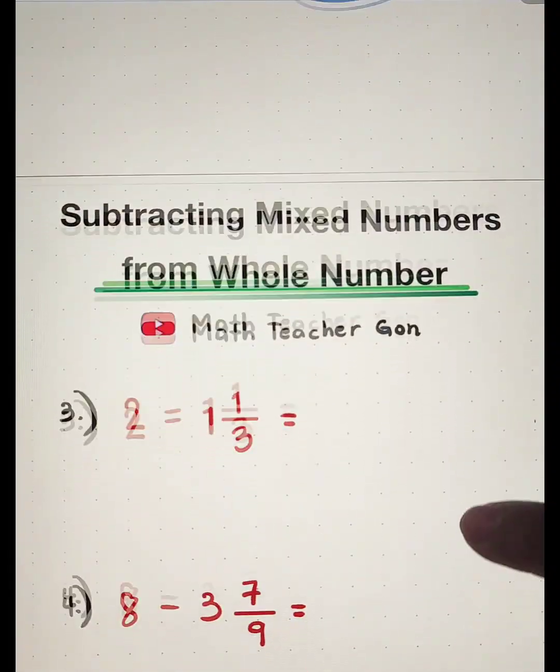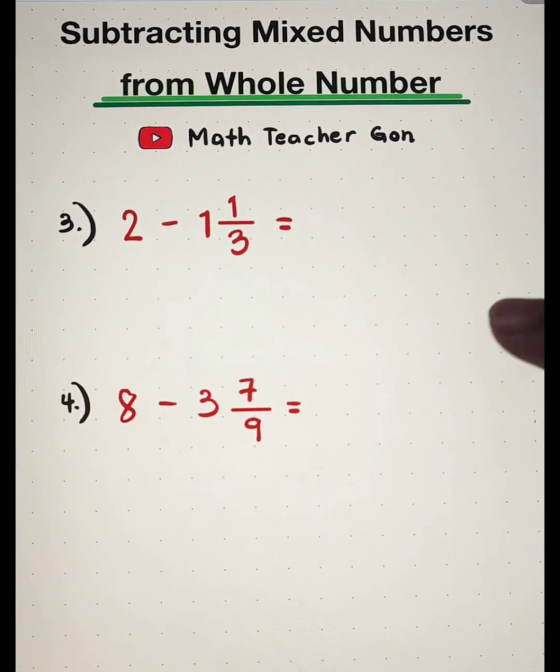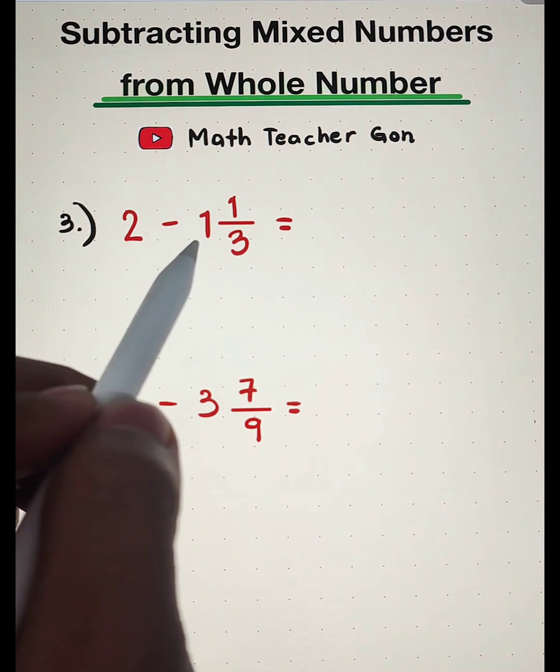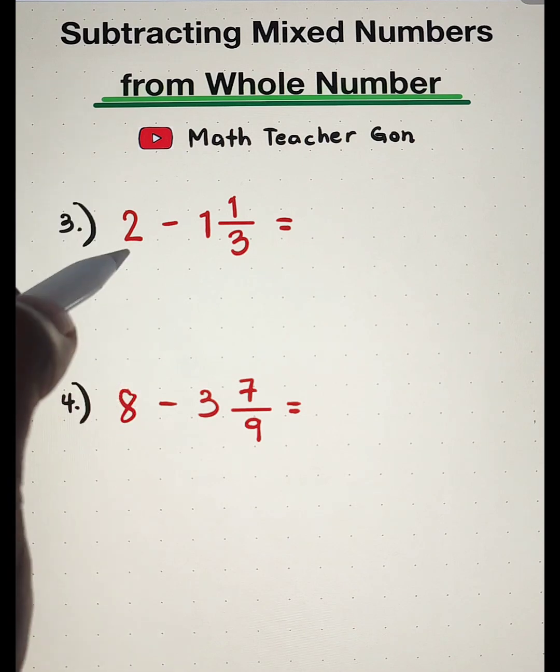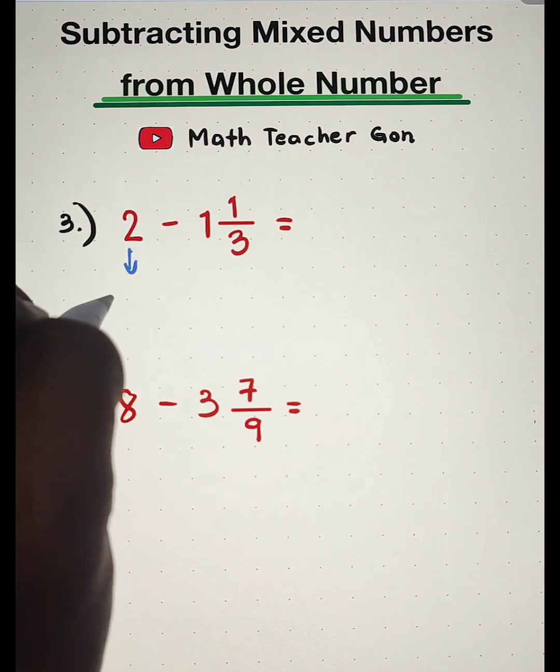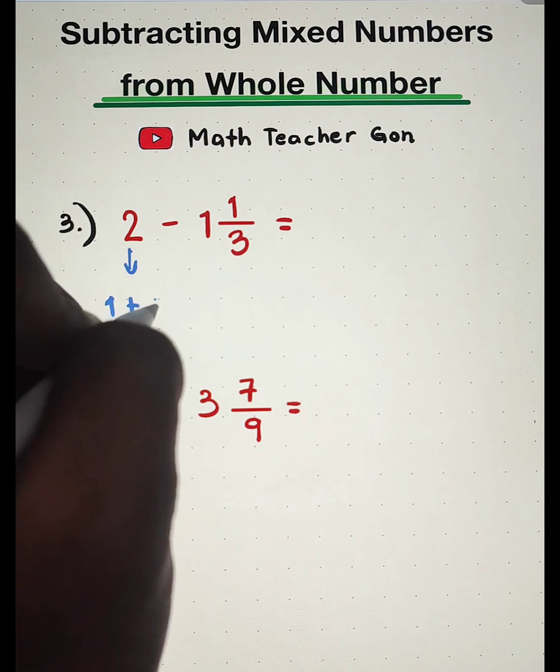Now let's move on with the third example. For the third example, we have 2 minus 1 and 1 third. This will be converted into 1 plus 1.